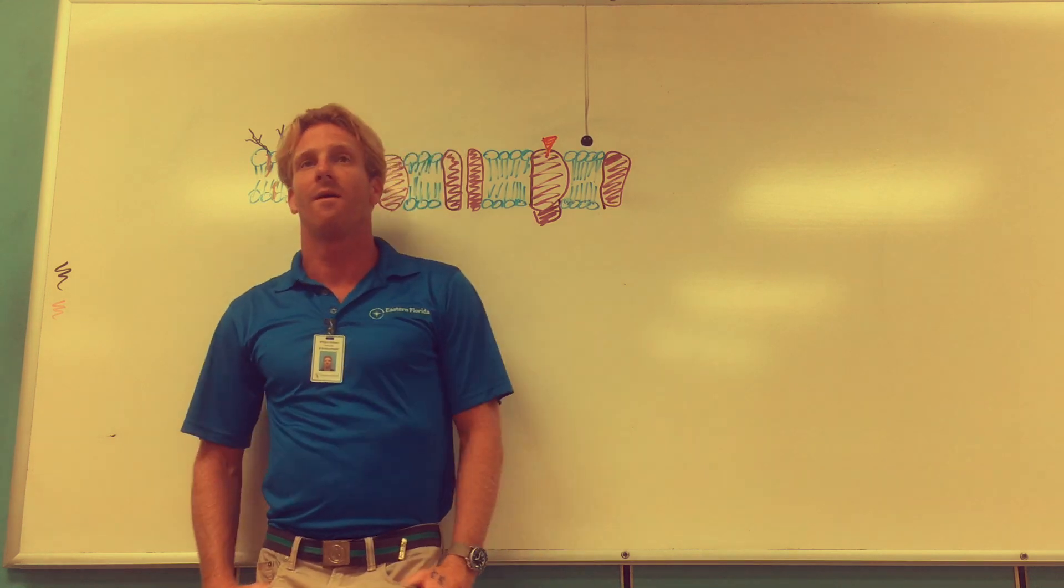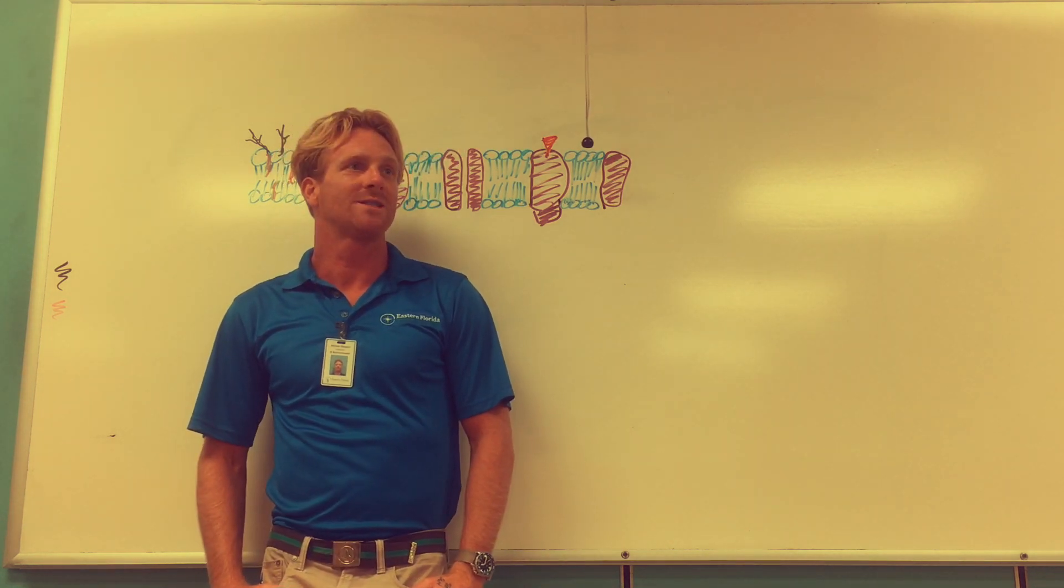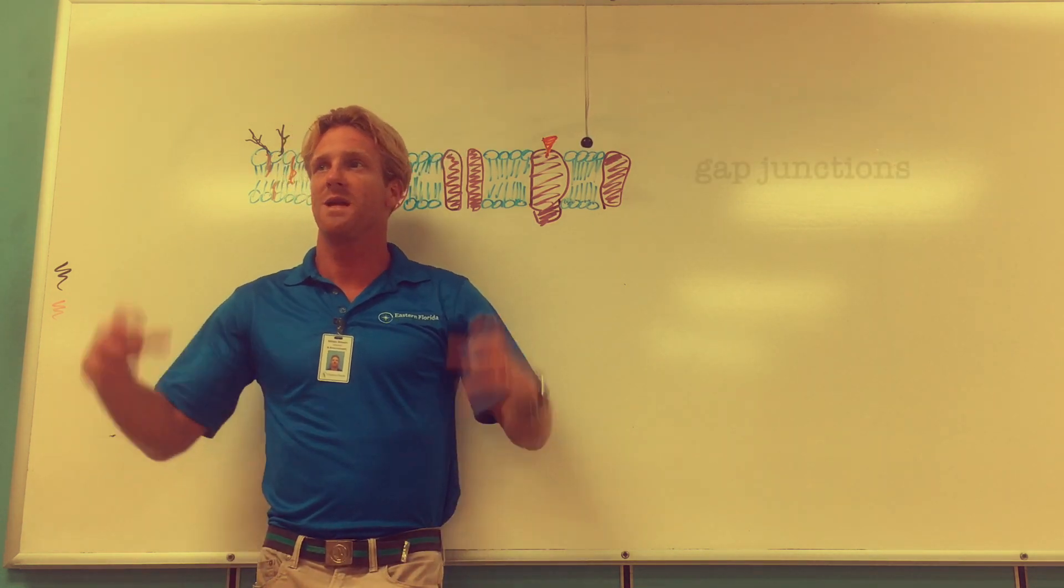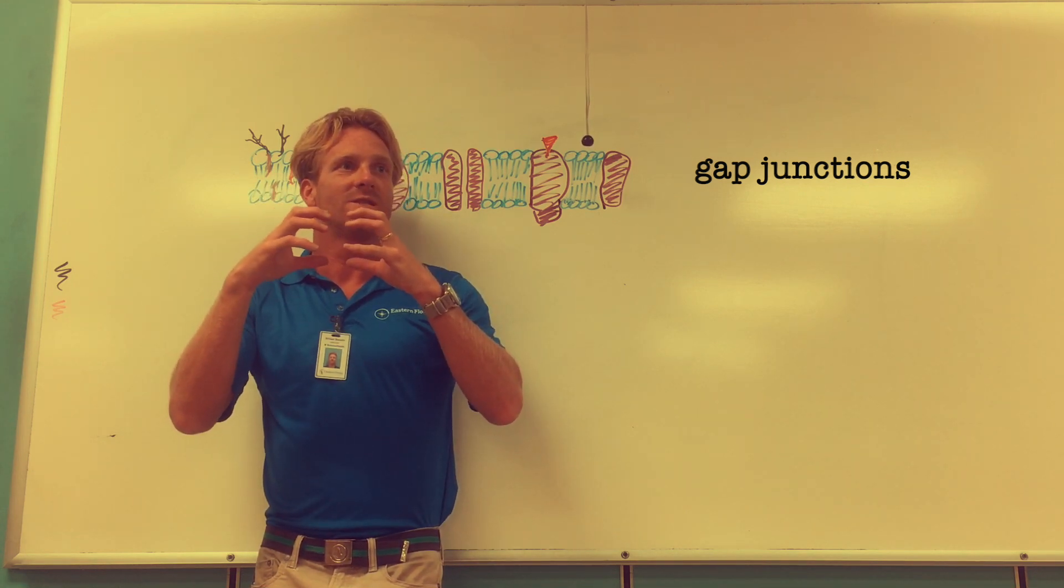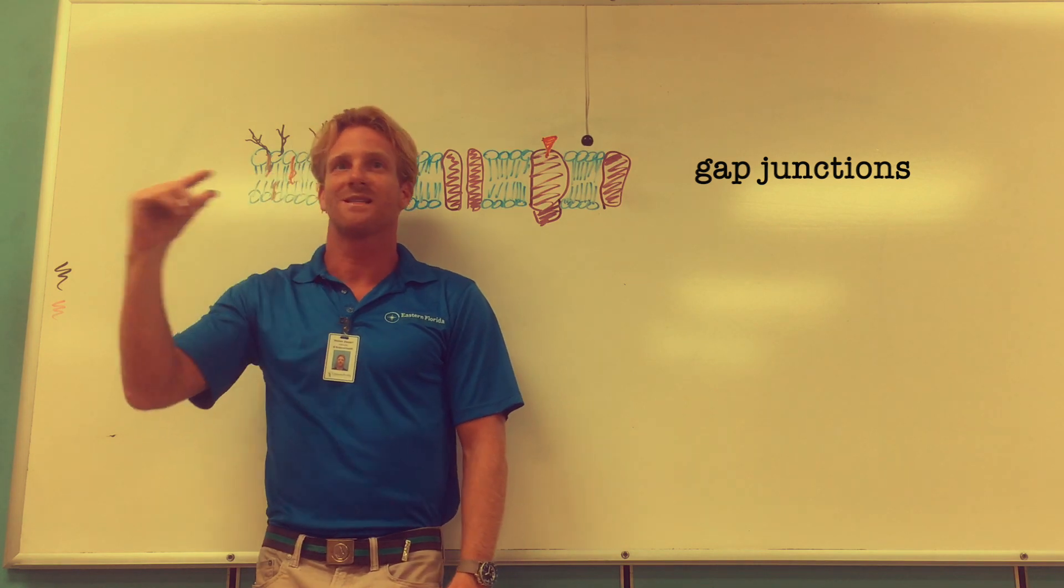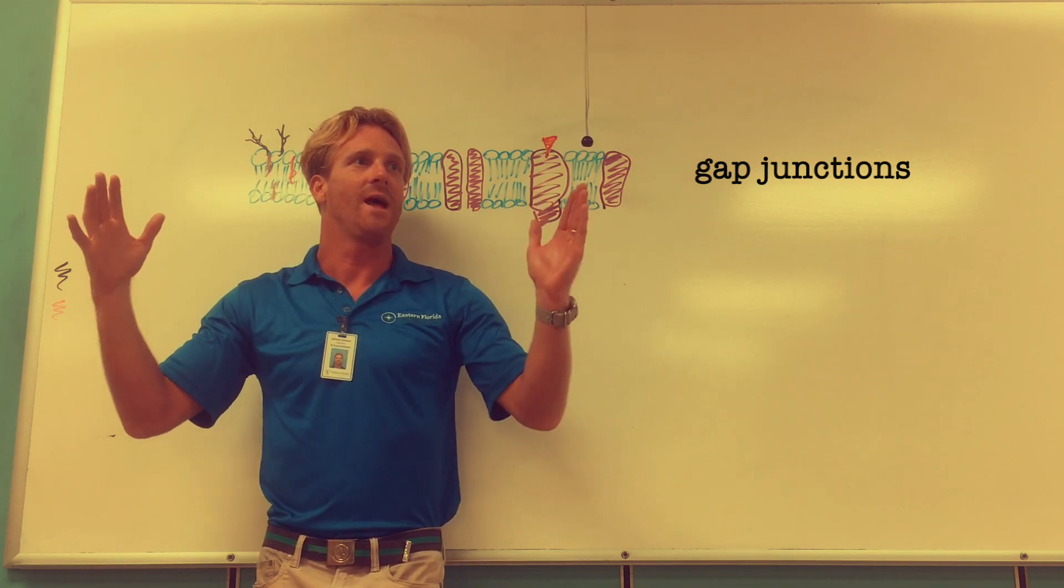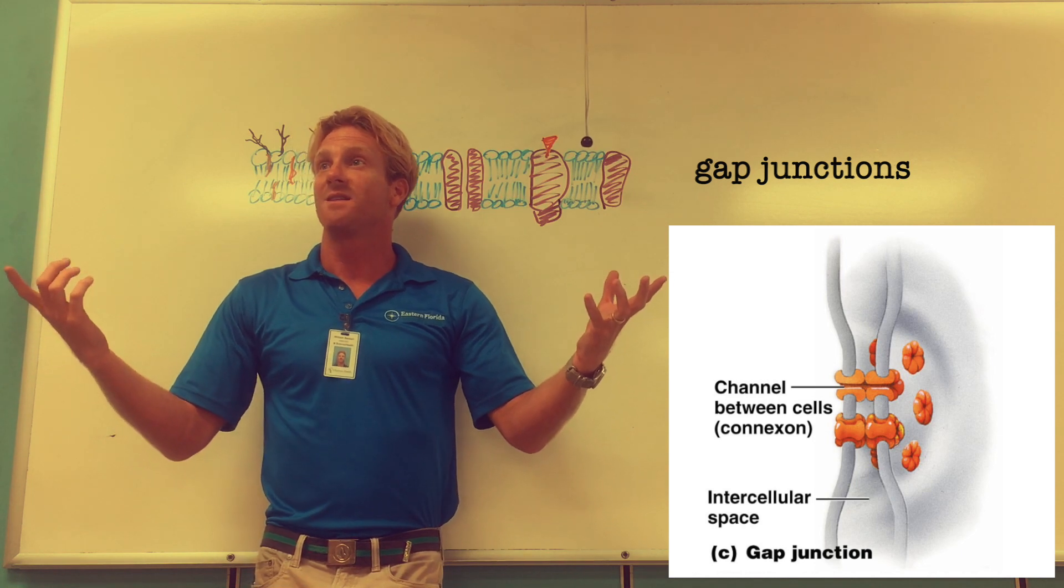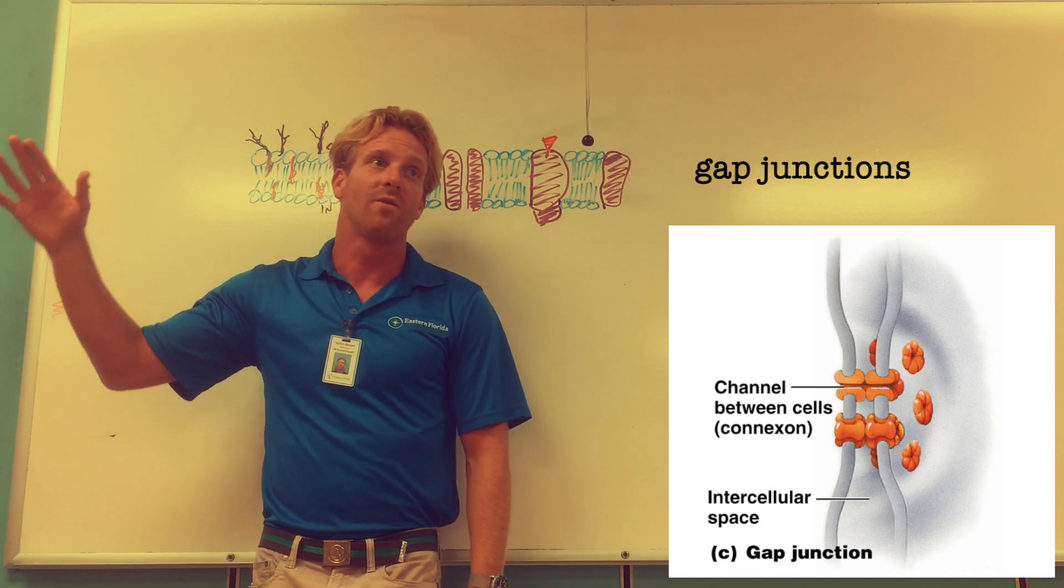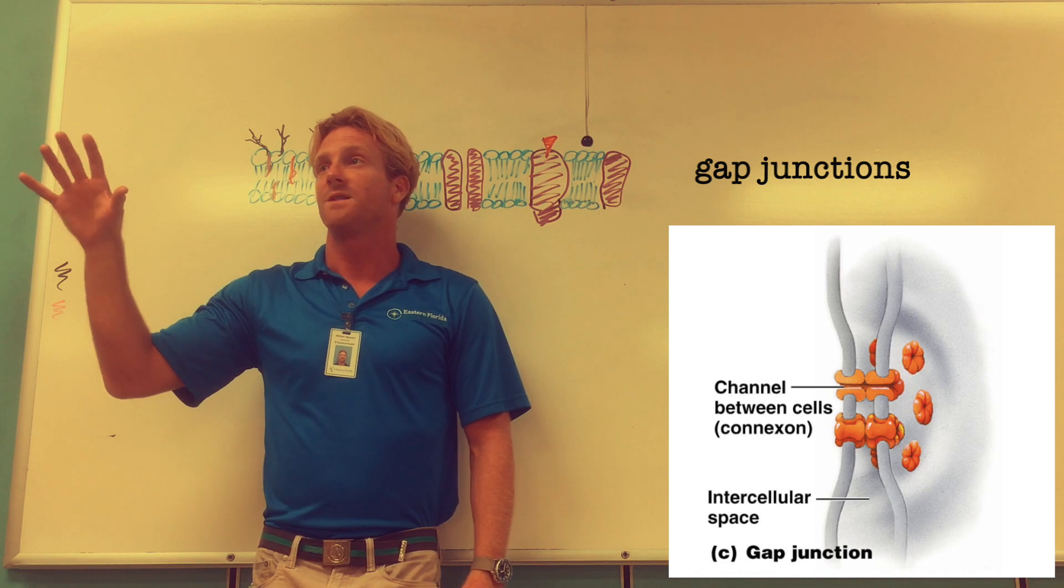The last type of union that you come across is called a gap junction. This is when you have two neighboring cells with proteins that match up on either cell and create a little tunnel that connects the cytoplasm from one cell to the next. These are also found in cardiac muscle cells and allow electrical signals to pass freely from one cell to its neighbor.